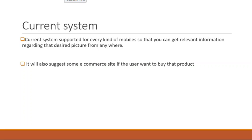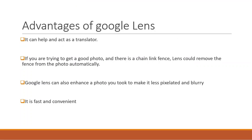Let's see some advantages of Google Lens. First, it can act as a translator. If you have a picture containing Chinese language, it can convert the language from Chinese to English or any other language so that the user can easily get information. Second, if you are trying to get good photos and there is a chain-link fence, Lens can remove the fence from the photo automatically.